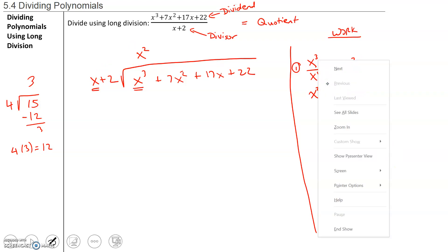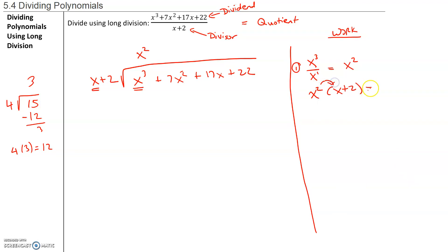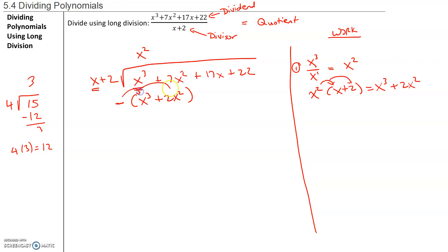x squared times x gives you x cubed, and x squared times 2 gives you 2x squared. Now here's the thing we have to remember: when we have 3 times 4 is 12, we subtract it. So we are going to be subtracting the x cubed plus 2x squared. That negative sign is going to distribute to both the x cubed and the 2x squared — so that becomes a negative x cubed and a negative 2x squared.